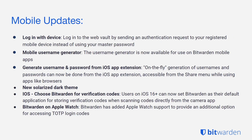In terms of mobile updates, we now support login with device via mobile. You can log into the web vault by sending an authentication request to your registered mobile device instead of using your master password. We've also implemented the mobile username generator — the username generator is now available for use on Bitwarden mobile applications. You can now generate usernames and passwords from the iOS app extension on the fly, and you can access this from the share menu while using apps like browsers as well.